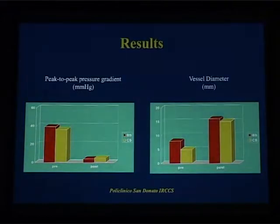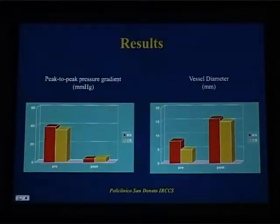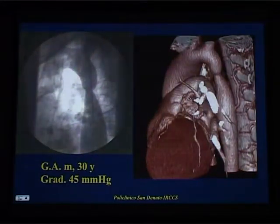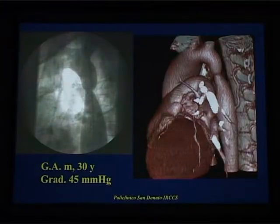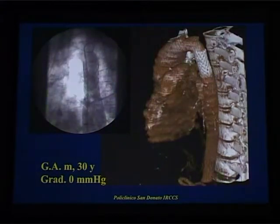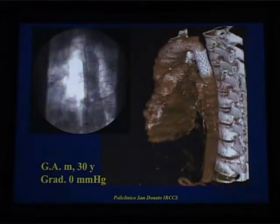The stent was successfully implanted in both groups of patients — bare metal stents and covered stents — with no significant difference for age, weight, gender, and type of coarctation. In both groups, we could reduce the peak-to-peak pressure gradient in the cath lab and increase the vessel diameter. This is a typical example of a moderate, discrete coarctation in a young man as seen by angiography and CT scan, and that's the angiogram and CT scan immediately after placement of the bare metal stent, with complete disappearance of the gradient across the stenotic point.